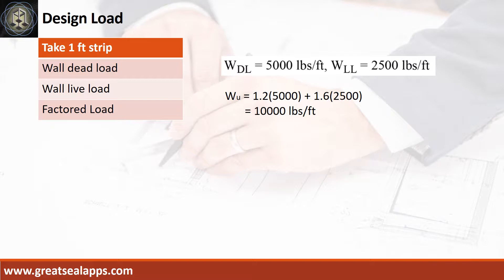The wall footing carries a uniform dead load of 5,000 pounds per foot and uniform live load of 2,500 pounds per foot for a factored load of 10,000 pounds per foot.